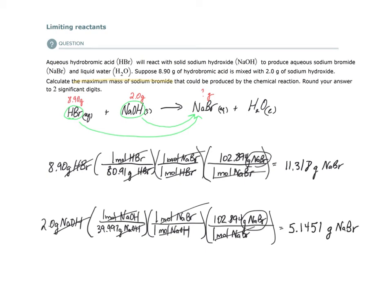Now let's figure out how much I need to round. Three significant digits here, two here. So we need to round our answer as they indicate in the problem to two significant digits. So this would be 11 grams of NaBr and 5.1 grams of NaBr.